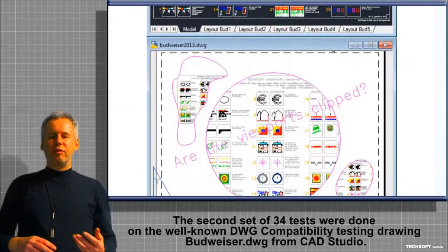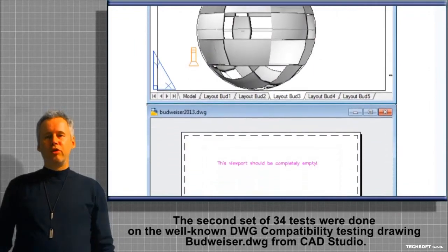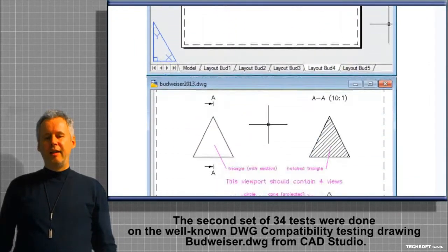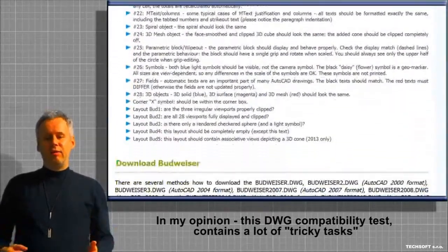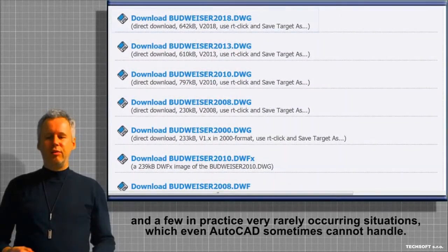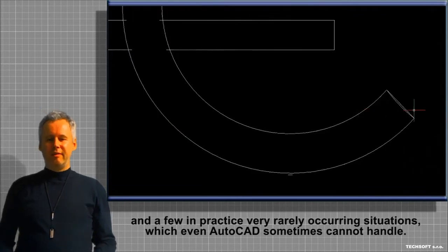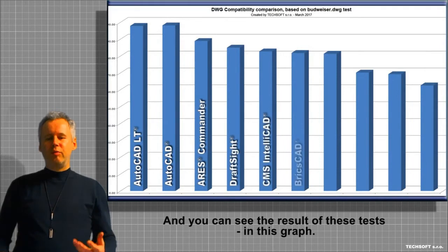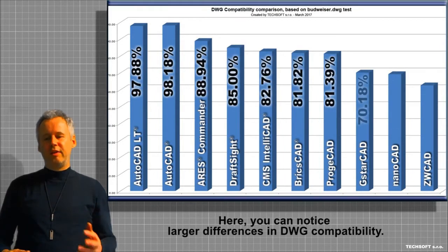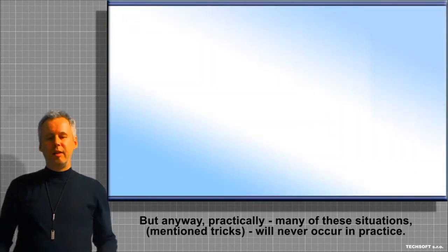The second set of 34 tests were done on the well-known DWG compatibility testing drawing Budweiser.dwg from CAD Studio. In my opinion, this DWG compatibility test contains a lot of tricky tasks and a few in practice very rarely occurring situations, which even AutoCAD sometimes cannot handle. You can see the results in this graph. Here you can notice larger differences in DWG compatibility, but practically many of these mentioned tricks will never occur in practice.